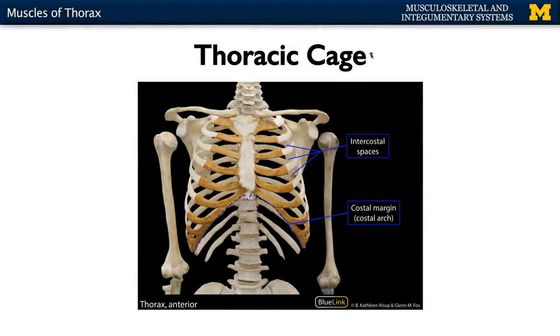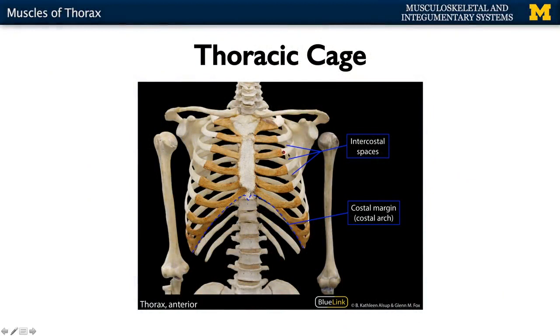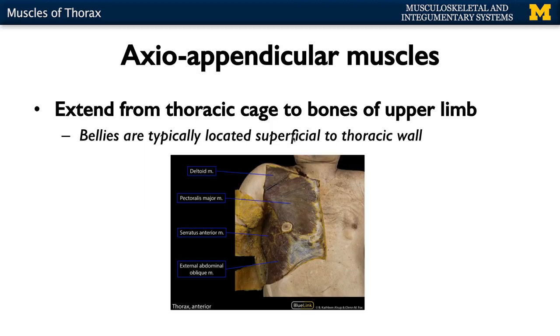Let's review the thoracic cage quickly. We have 12 ribs on each side, and each of these ribs either has its own costal cartilage — indicated here in tan — or a shared costal cartilage. You're going to have muscles in between these intercostal spaces, as well as superficial muscles that play more of a role in the shoulder joint — these axial-appendicular muscles.